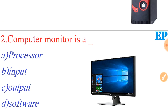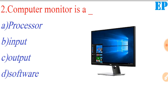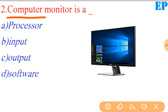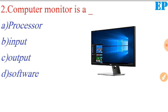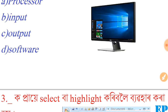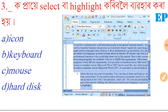The next question: a computer monitor is what? A computer monitor is an output device. Yes, computer monitor is an output device. Next, number three.